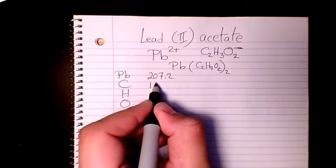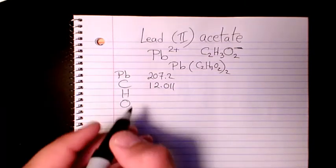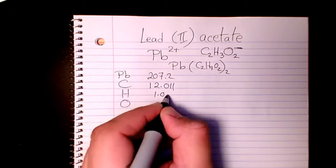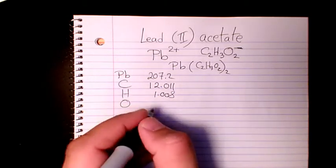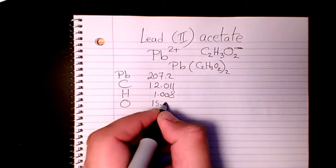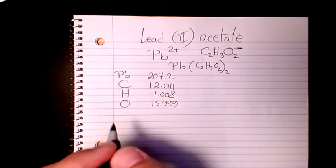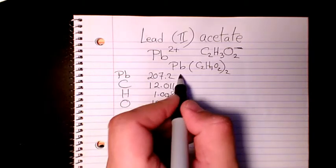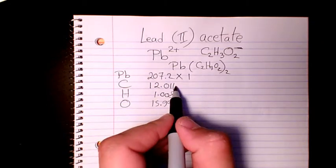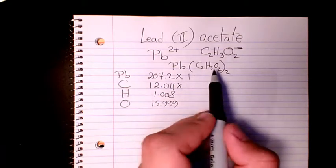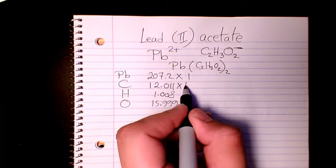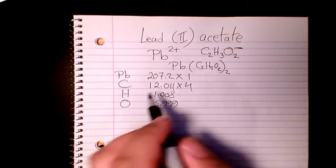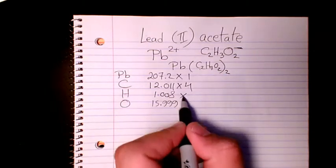Lead, we have only one of them. Carbon, how many carbon do we have? We have 2 times 2, which is 4 of them. Hydrogen is 2 times 3, which is 6. Oxygen is 2 times 2, which is 4.